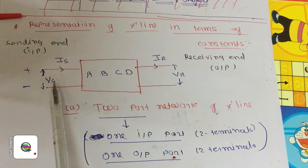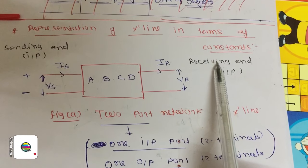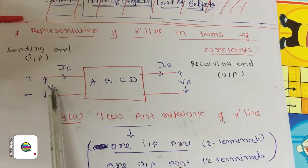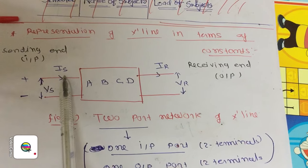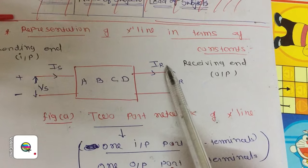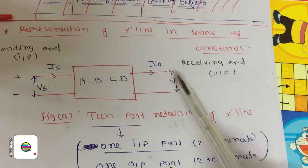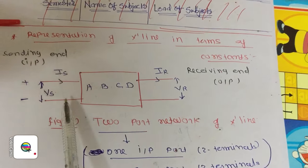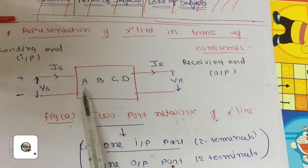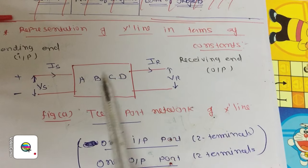This is the input side, which is the sending end. This is the output side, which is the receiving end. At the sending end, Vs and Is are available: Vs represents the sending-end voltage and Is represents the sending-end current. Vr and Ir are the receiving-end voltage and receiving-end current. We will write the equations of Vs and Is in terms of Vr and Ir using ABCD parameters.